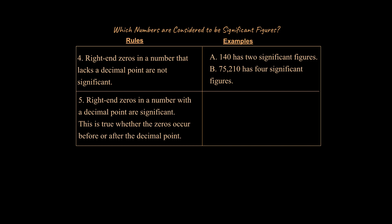All right, and lastly, right-end zeros in a number with the decimal point are significant. This is true whether the zeros occur before or after the decimal point. Think about what this would mean. Okay, and so two examples here that you can take a look at. So the very first example, this A example, has four significant figures and this one over here has five significant figures.